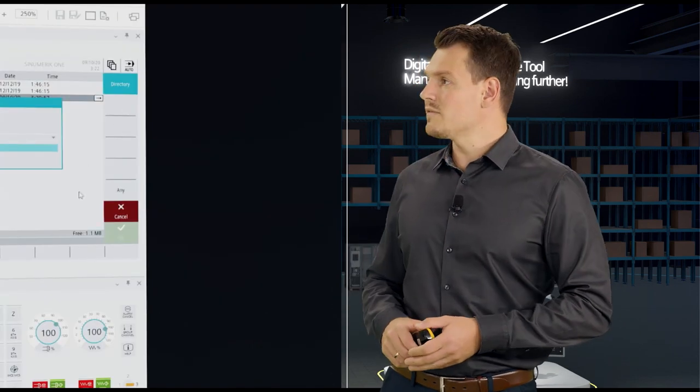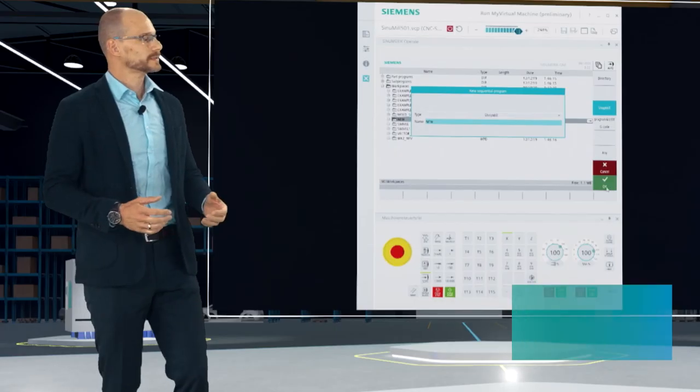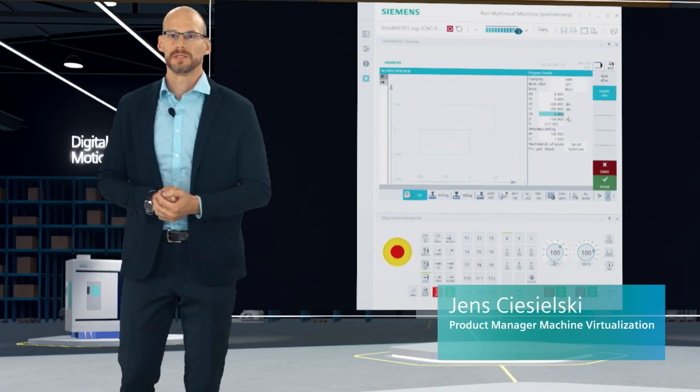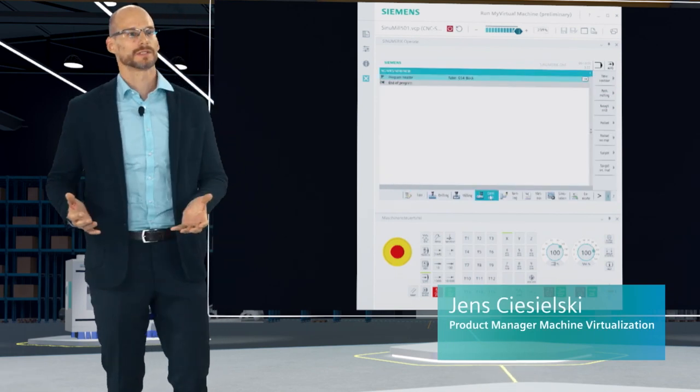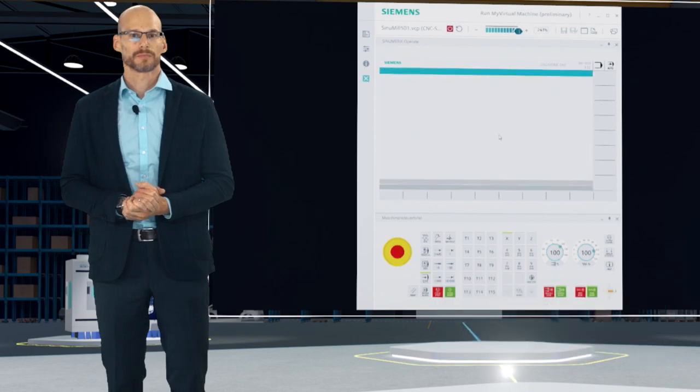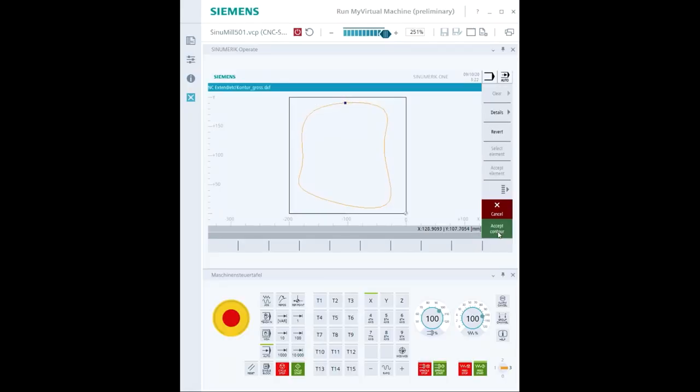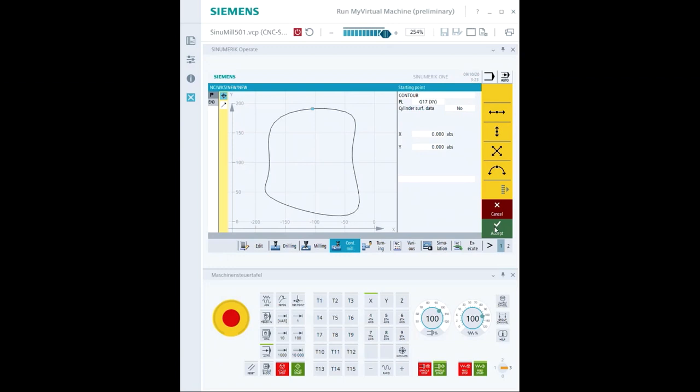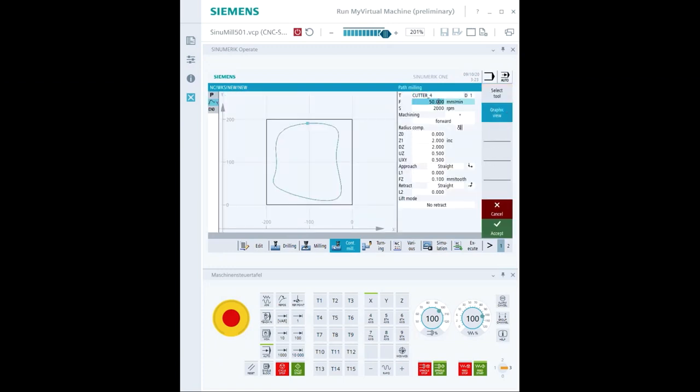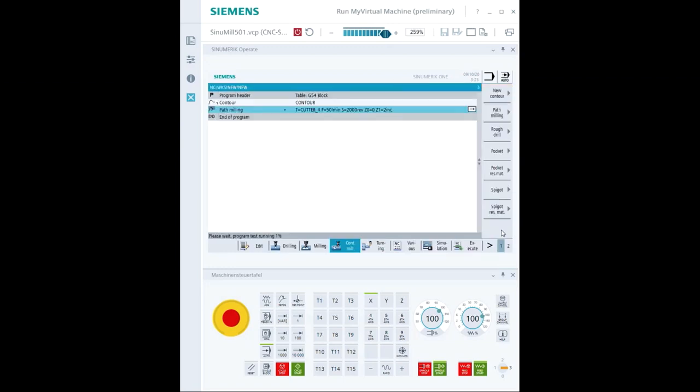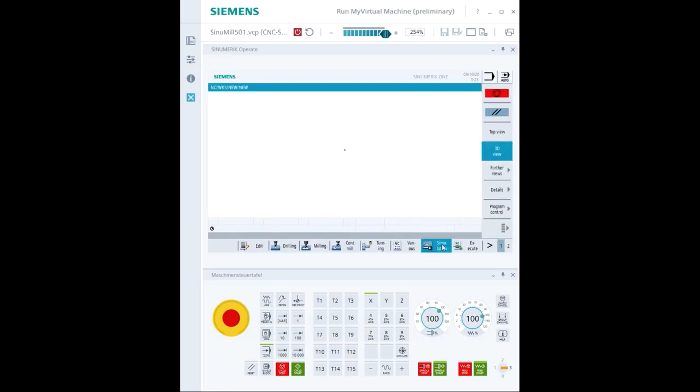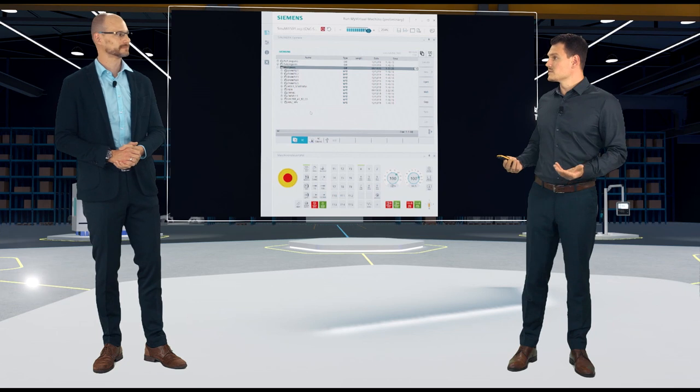Jens, do we have such a tool? Yes, Johann. The easiest way to meet your needs is to use a virtual CNC control or Run My Virtual Machine. Here you can create an NC program as it knows from the machine. For example, with Shopmill. After that, you can verify the NC program in the integrated simulation system.